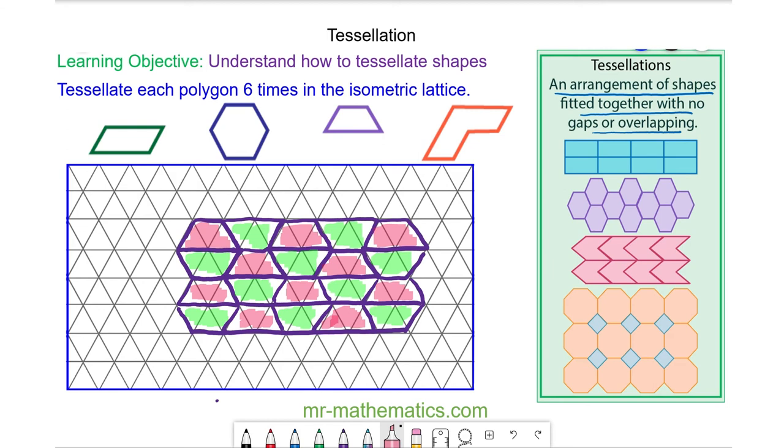So you can see this trapezium does tessellate as it can grow in all directions infinitely. Okay and for our final shape.